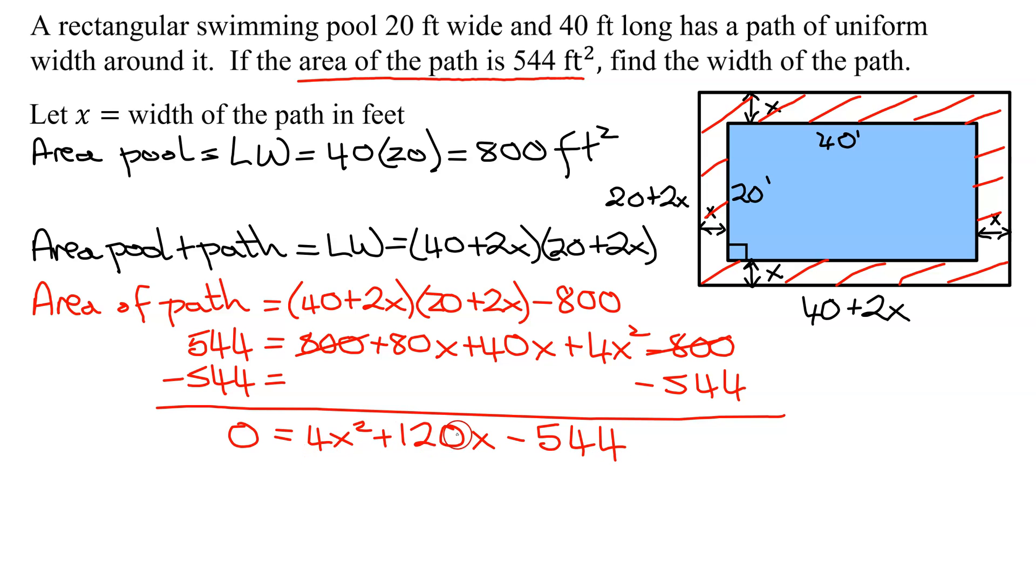4 divides evenly into each of these numbers. So I'm going to get 0 equals 4 times x squared plus 4 divides into 120, 30 times. So I get plus 30x minus 4 divides into 544, 136 times.